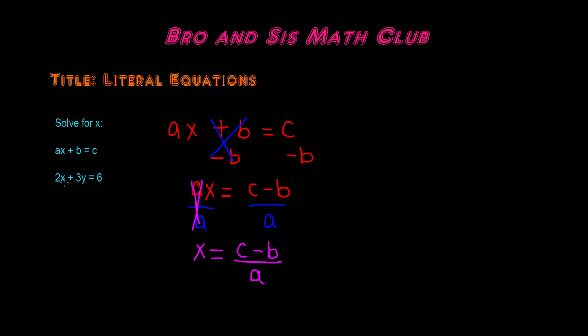All right, now let's solve the second literal equation. So the second literal equation is 2x plus 3y is equal to 6.